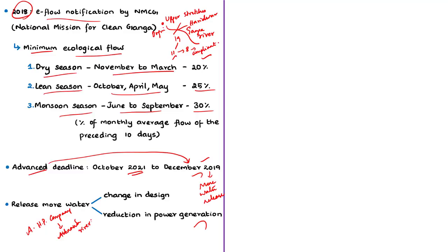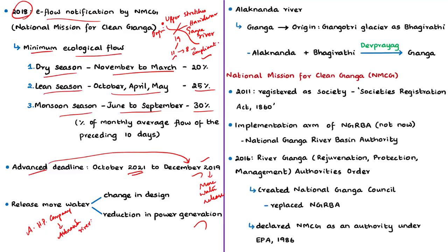River Ganga originates from the Gangotri Glacier in Uttarkashi district, Uttarakhand, as River Bhagirathi. River Alaknanda joins Bhagirathi at Devprayag, and from Devprayag the river is called River Ganga. The Alaknanda Hydropower Company claims that its power production and profits will be affected if flows must be increased, and it is seeking compensation of nearly 4,000 crores from NMCG and the Uttarakhand government.